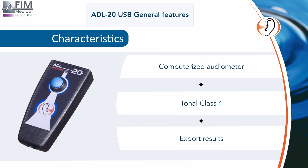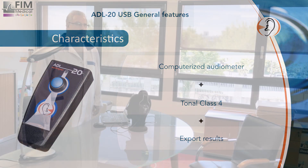The ADL20 audiometer is a computerized unit. A USB connection only is required. It is a tonal class 4 audiometer. Test results can be exported in PDF and ASCII formats to be compatible with all EMRs.